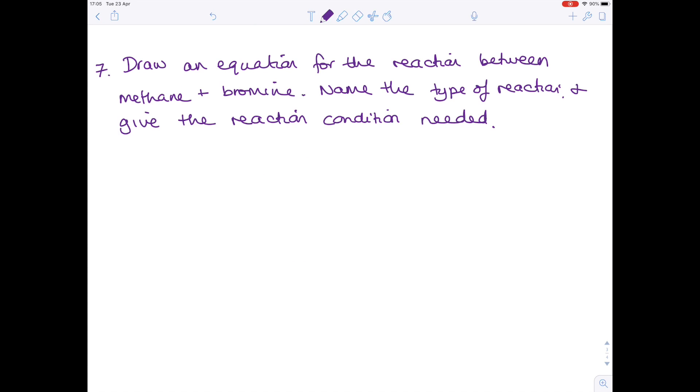Question seven: draw an equation for the reaction between methane and bromine. Name the type of reaction and give the reaction condition needed. Methane contains one carbon and is saturated, which means it has no double bonds. Bromine again is diatomic, so exists as Br2. What happens is that we lose one of the hydrogens and one of the Br's attaches. So what you form is this compound with HBr left over.